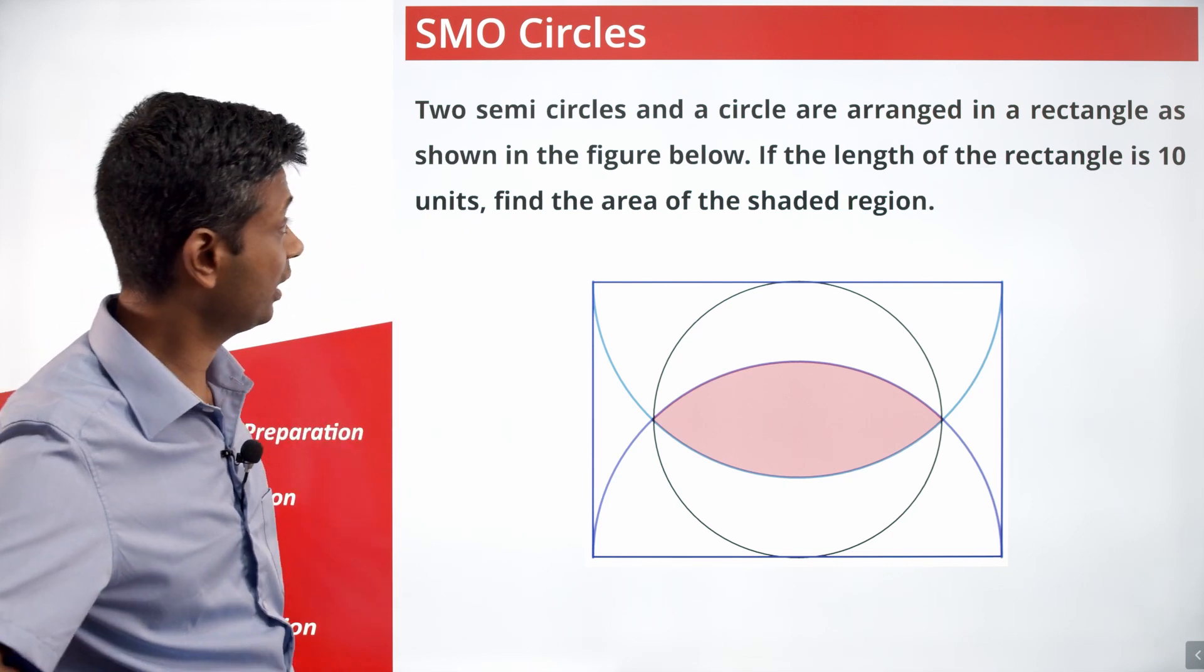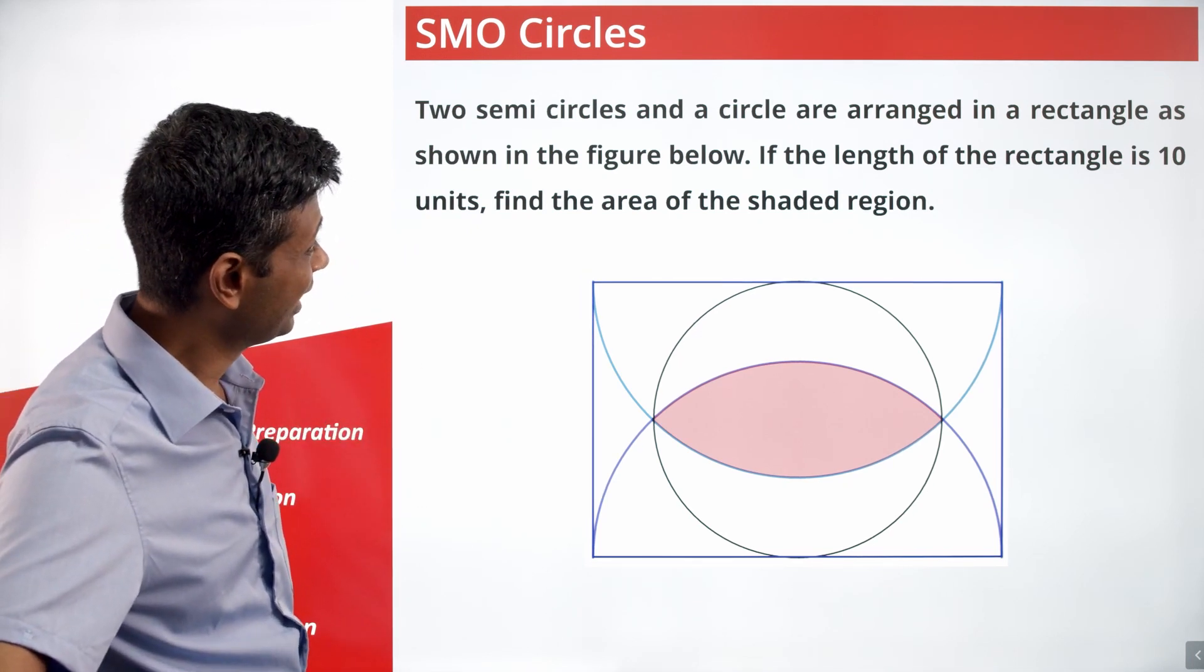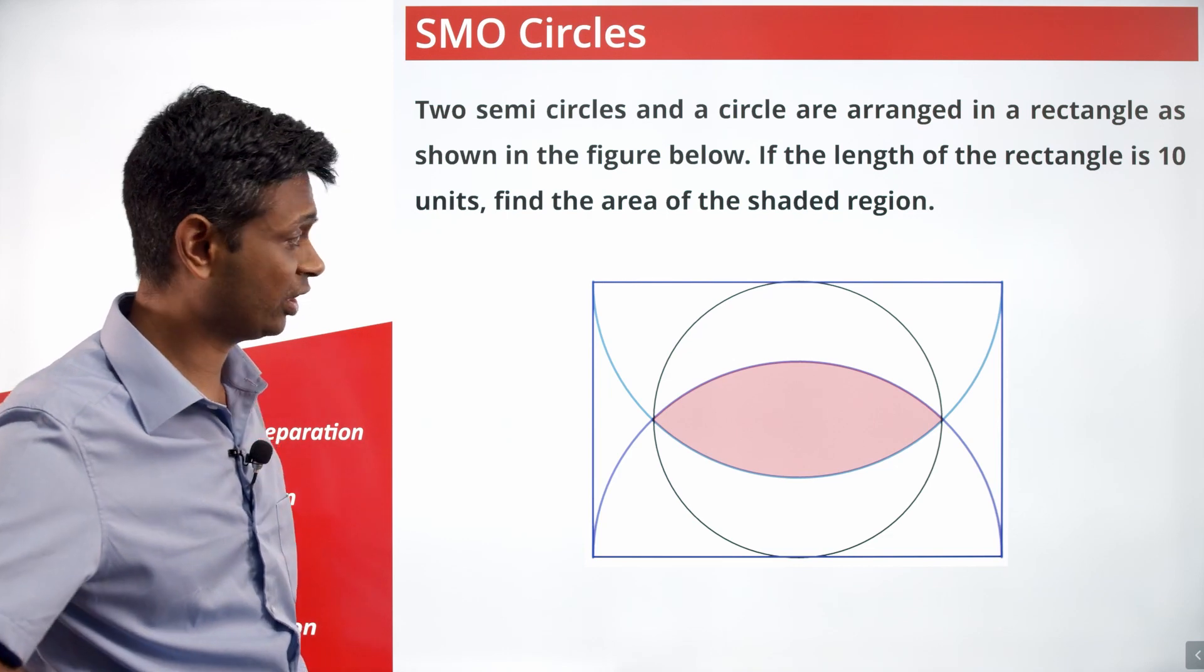Two semicircles and a circle are arranged in a rectangle as shown in the figure below. The length of the rectangle is 10 units. Find the area of the shaded region.